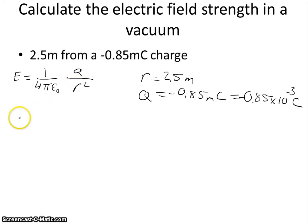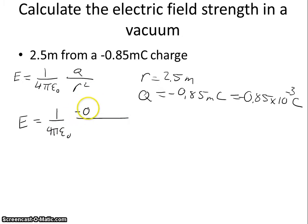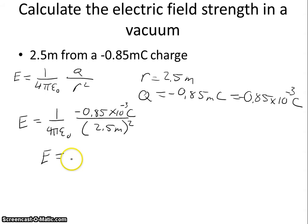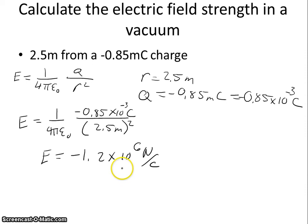Plugging our values into the equation: electric field strength equals 1 over 4 pi epsilon naught, times negative 0.85 times 10 to the minus 3 coulombs, divided by 2.5 meters squared. After doing all the math, we get negative 1.2 times 10 to the sixth newtons per coulomb. So the electric field strength at 2.5 meters away is negative 1.2 times 10 to the sixth newtons per coulomb.